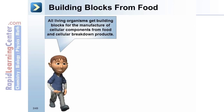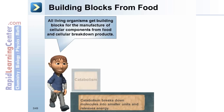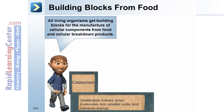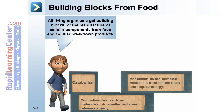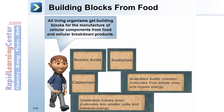All living organisms get building blocks for the manufacture of cellular components from food and cellular breakdown products. Catabolism breaks down molecules into smaller units and releases energy. Anabolism builds complex molecules from simple ones and requires energy.